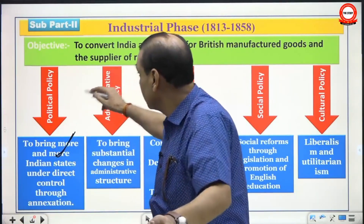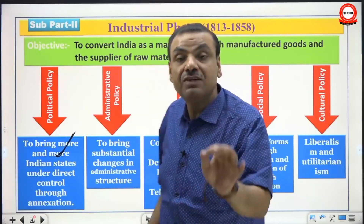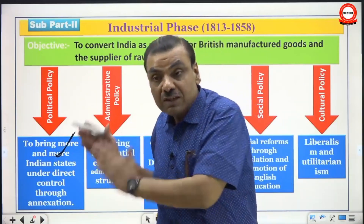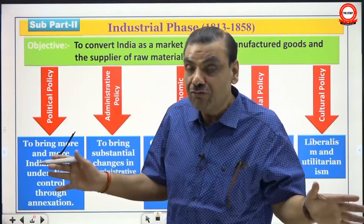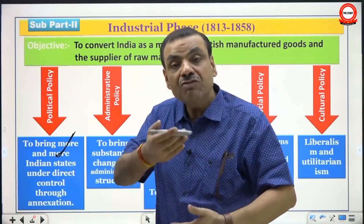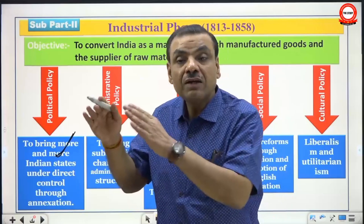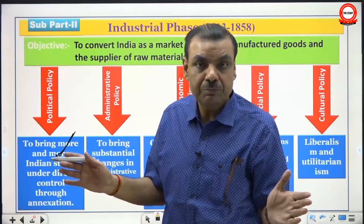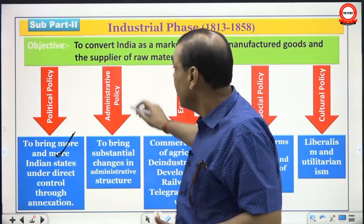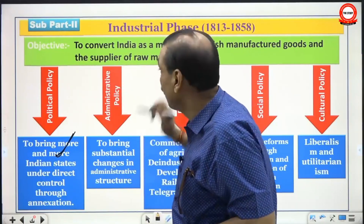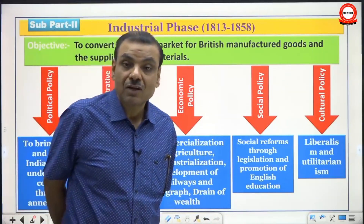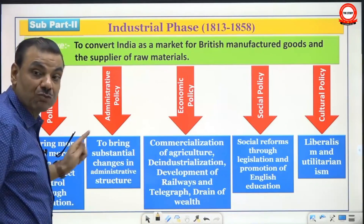The first sub-topic under industrial phase is political policy. The method followed here uses a diagram so that once the basic essence of the analysis is clear, the information — which serves as examples of interpretation — becomes easier to recall. The objective of British policy in this phase was to convert India into a market for British manufactured goods and a supplier of raw materials. This objective shaped British political policy.